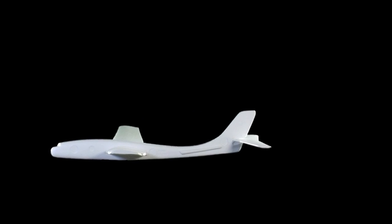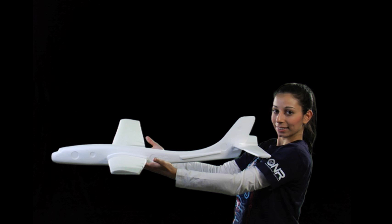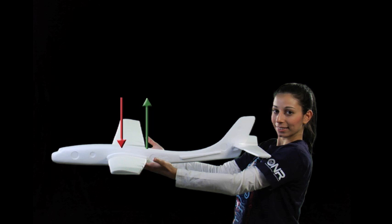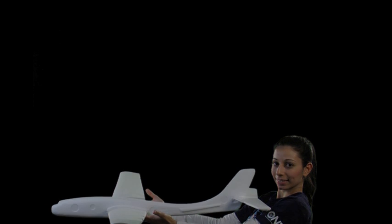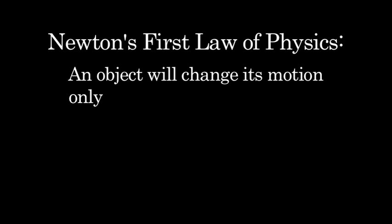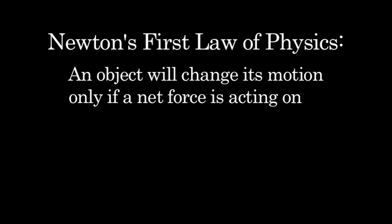That would be the force of lift. As you can see here, Jess pushes up on the plane's wings even though gravity is trying to pull the plane down. Right now the amount of force she is using to keep the plane level is equal to gravity and there is no movement. This is Newton's first law in action, which states that an object will change its motion only if a net force is acting on it.